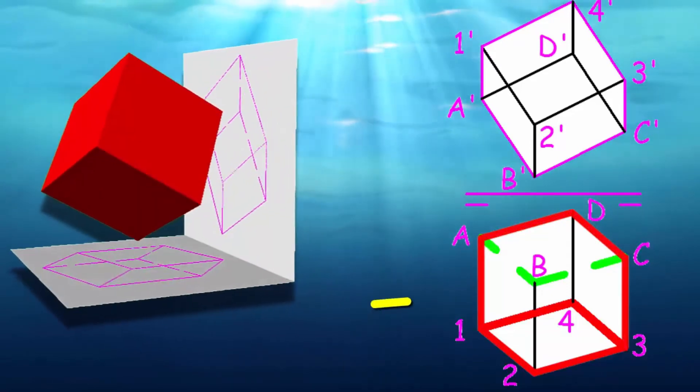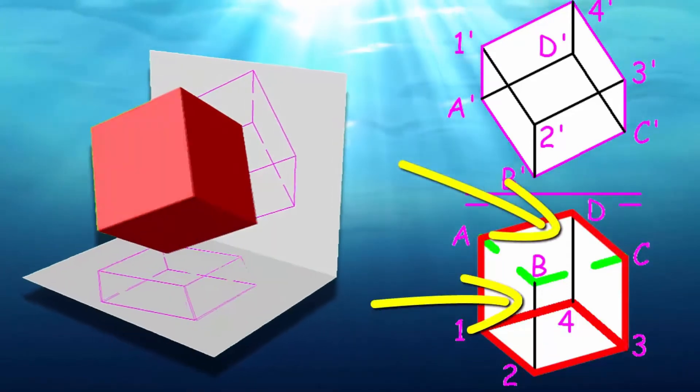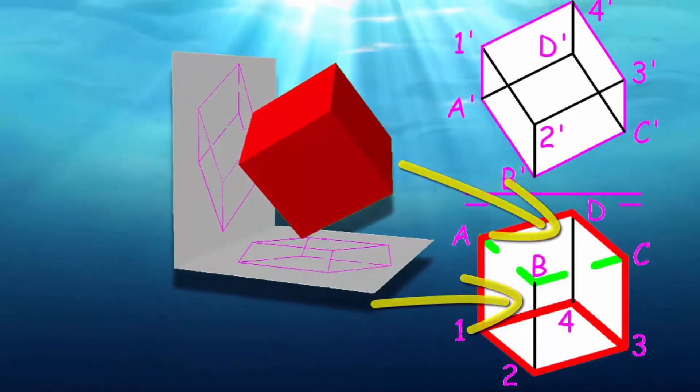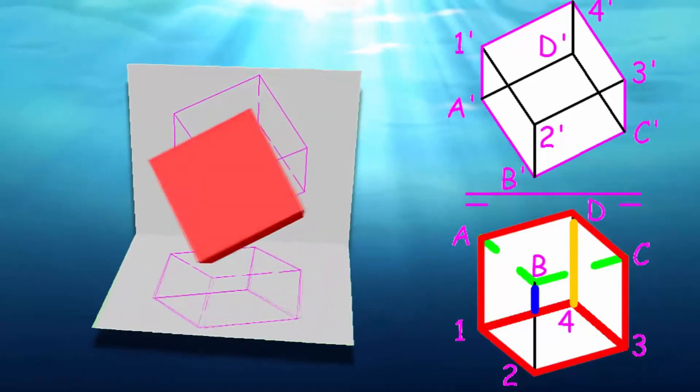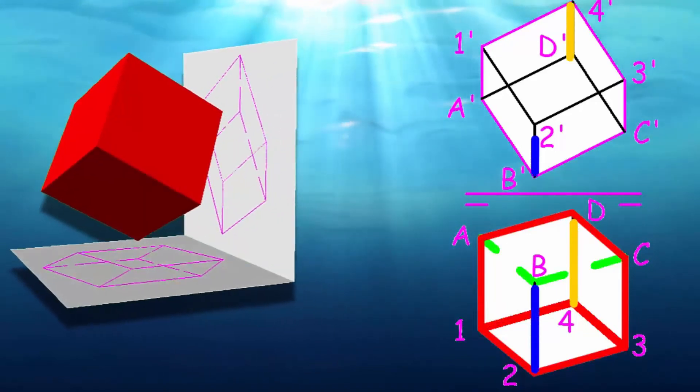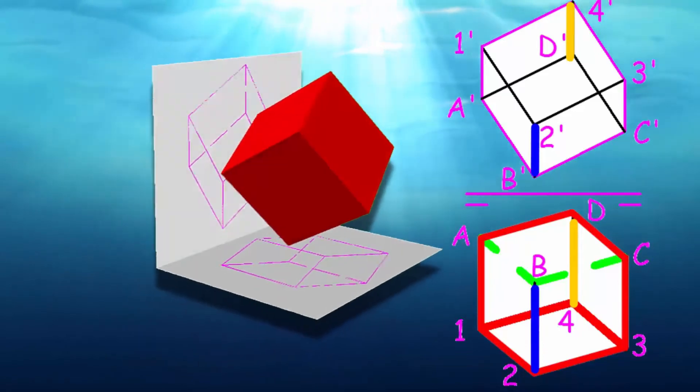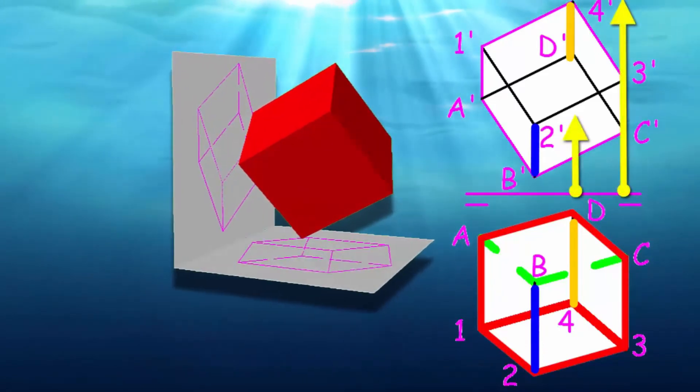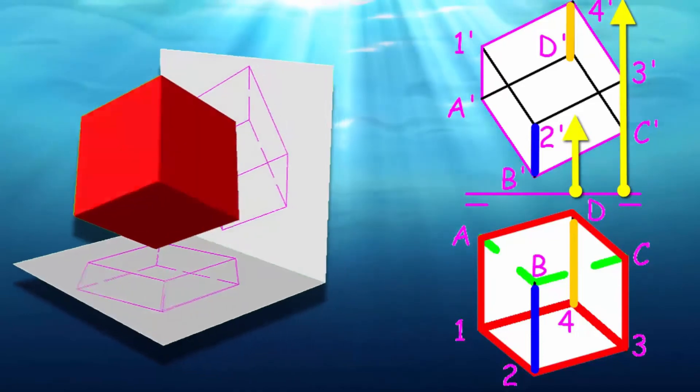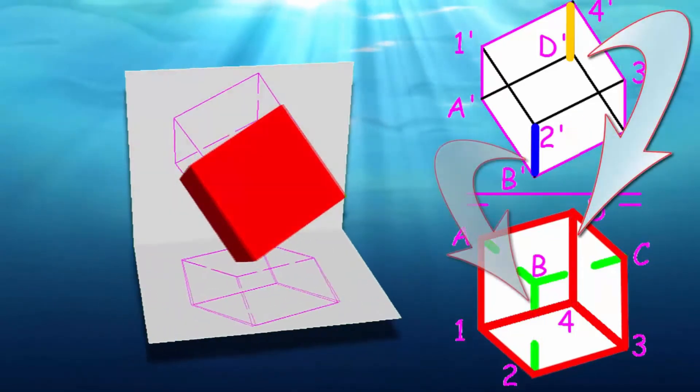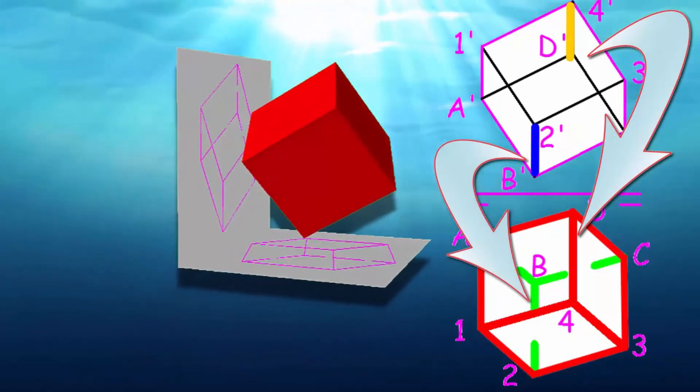There are still lines B2 and D4 to be determined. The rule can be applied as many times as you like. We could compare two other faces, but in this case it will be more comfortable to just compare the two edges that remain. In the front, D4 has the greatest height, so it will be seen in the horizontal projection while B2 will be hidden.